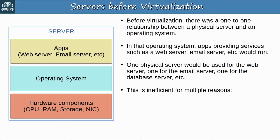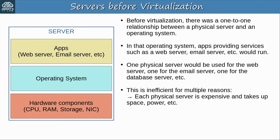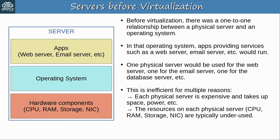Now it is possible to run all servers in a single operating system on a single physical server, but this is not a good idea, because if the servers aren't isolated from each other, a problem on a single app could affect all of the other apps. However, using one physical server per app is inefficient for multiple reasons. Each physical server is expensive and takes up space, power, etc. Also the resources on each physical server — for example CPU, RAM, storage, and NIC capacity — are typically underused. NIC means network interface card, the part of the server that connects to the network.